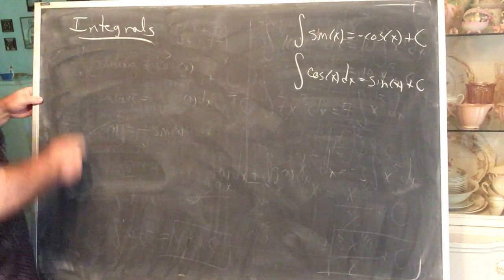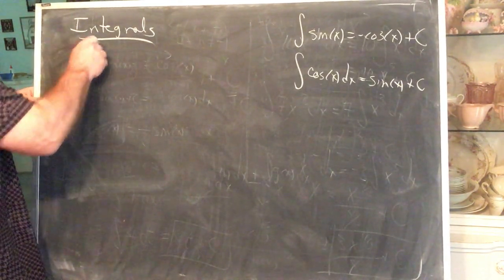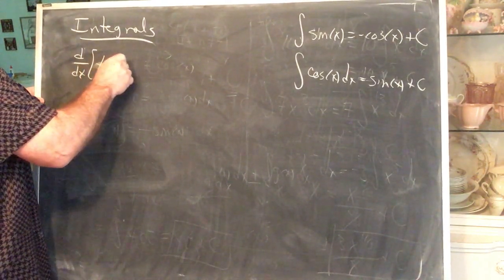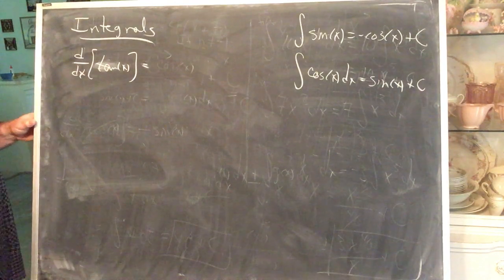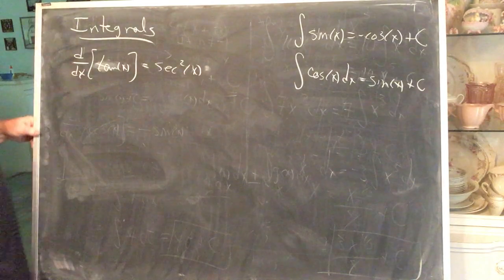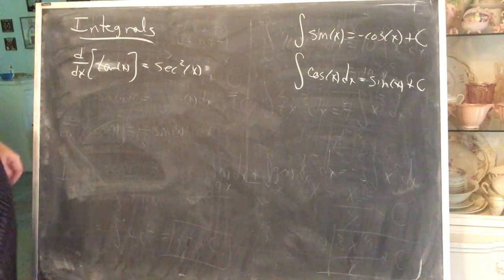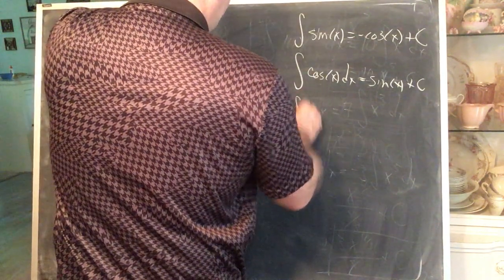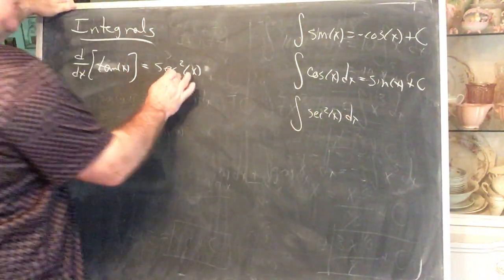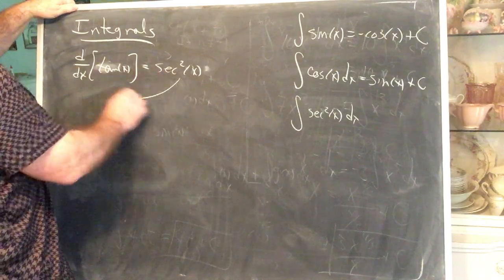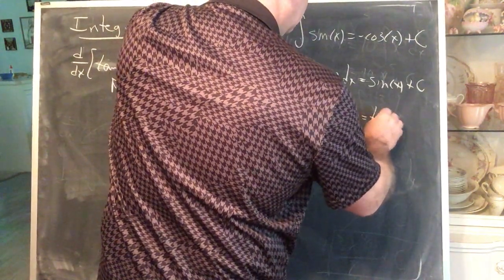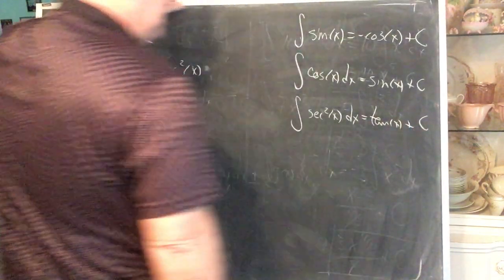What do we know about the derivative of tangent of x? The derivative of tangent of x is secant squared of x. So the antiderivative of secant squared of x is tangent of x plus the constant.